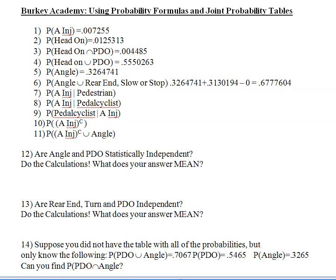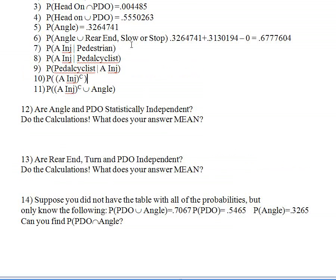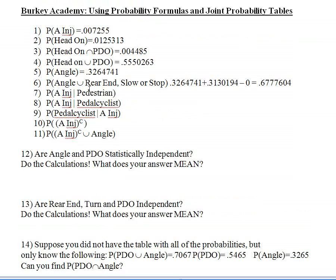Welcome back. We're going to finish up these problems dealing with accident probabilities. This is really where it starts to get interesting when talking about conditional probabilities and statistical independence. Number seven: what's the probability that an accident involves an A injury, given that we know it involved a pedestrian — someone who was walking? Now this is an interesting question, so get your conditional probability formula out.